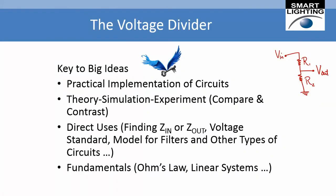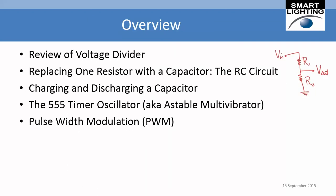We're going to review the voltage divider, then replace a resistor with a capacitor to make an RC circuit, look at charging and discharging the capacitor, and then look at a very interesting device called the 555 timer oscillator — also known as an astable multivibrator — which produces a sequence of pulses that behave like pulse width modulation, used to control motors for robots and similar applications.